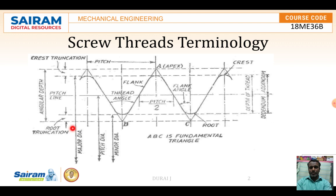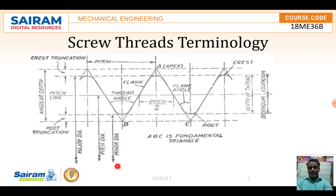The major diameter is the distance from crest to the crest on the other side. The distance between those two crests is called the major diameter. Then comes the minor diameter — from root to the other side root, the distance in between is called the minor diameter.